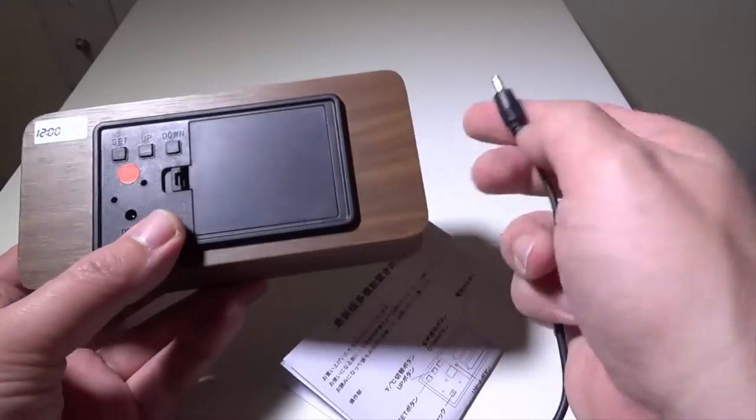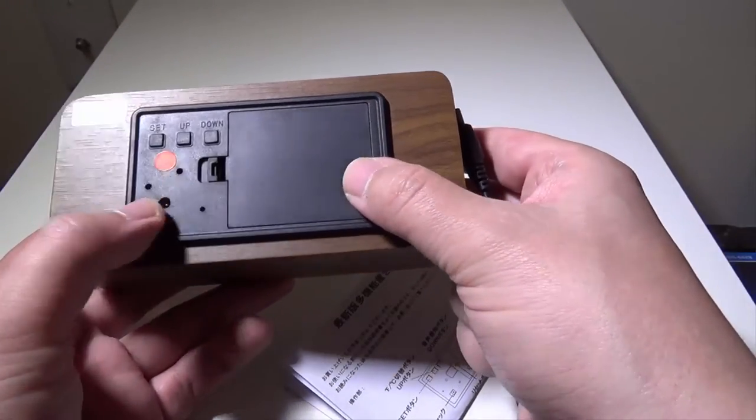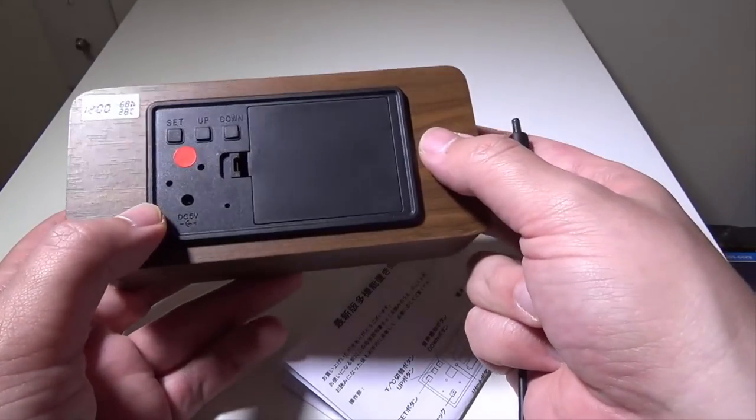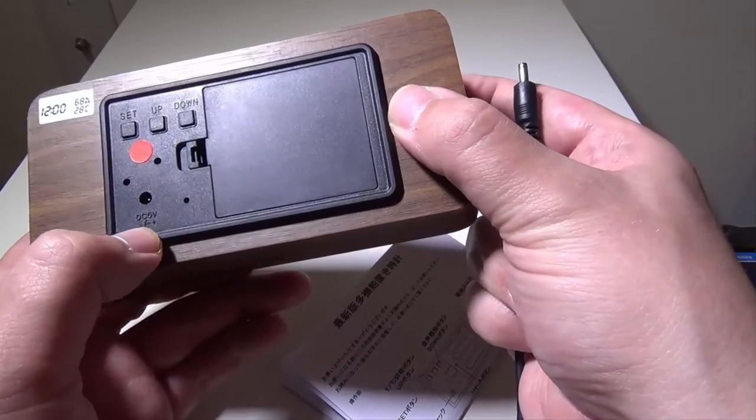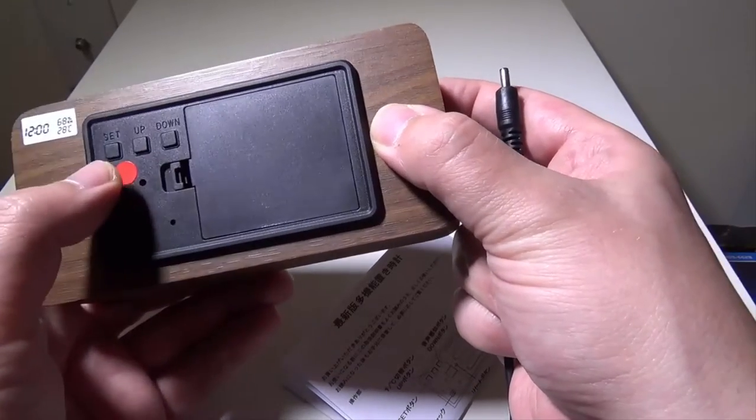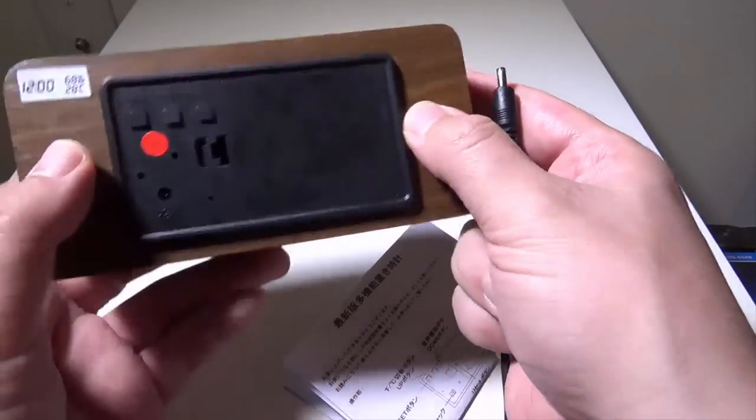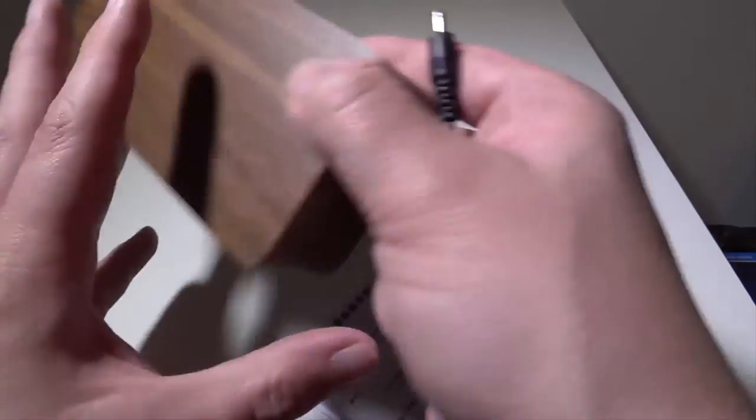You'll have to have your own wall adapter, or you can plug it into any laptop or PC USB port. There's your DC 5 volt input right there. You've got an up and down and a set button to set the time and everything on the front.